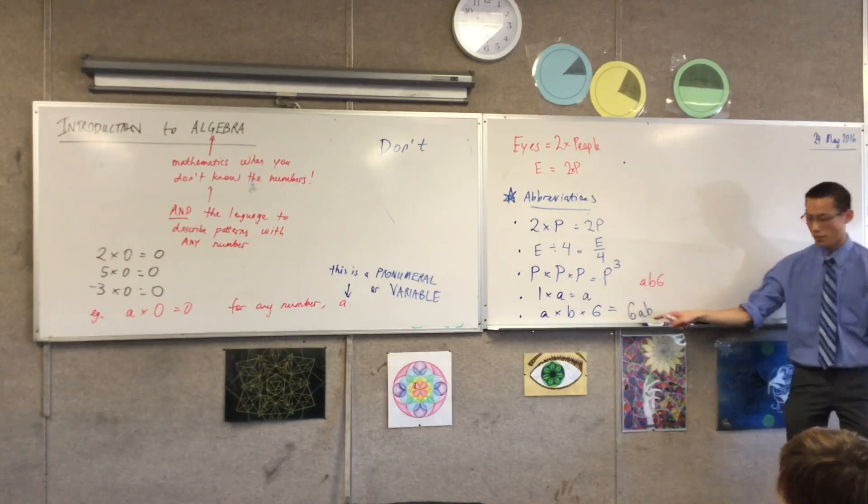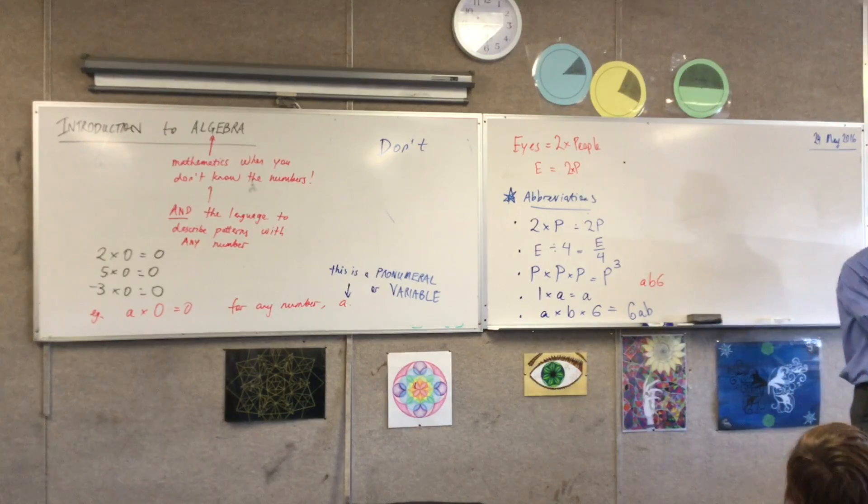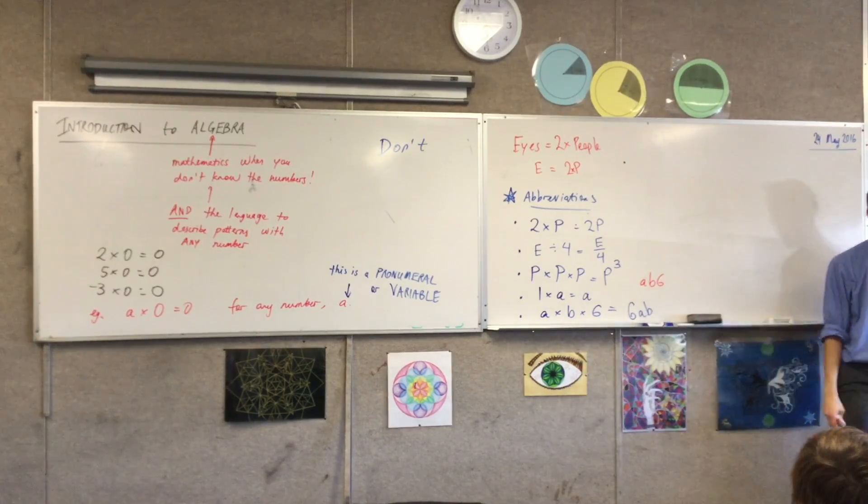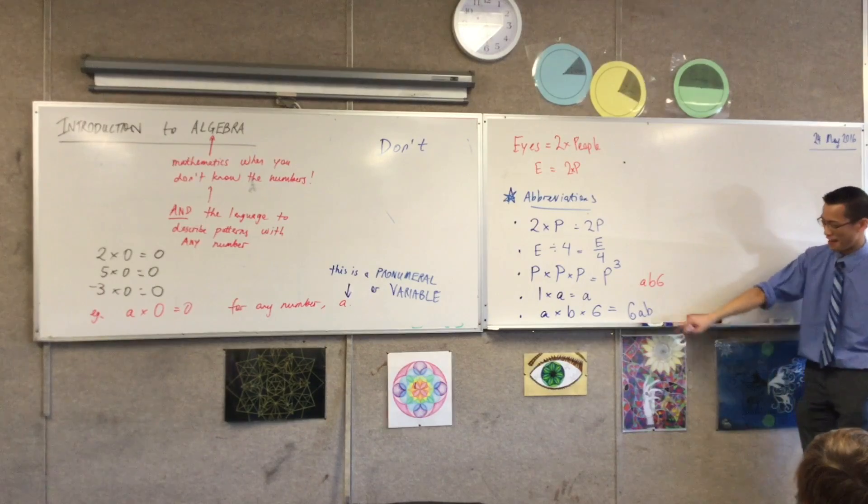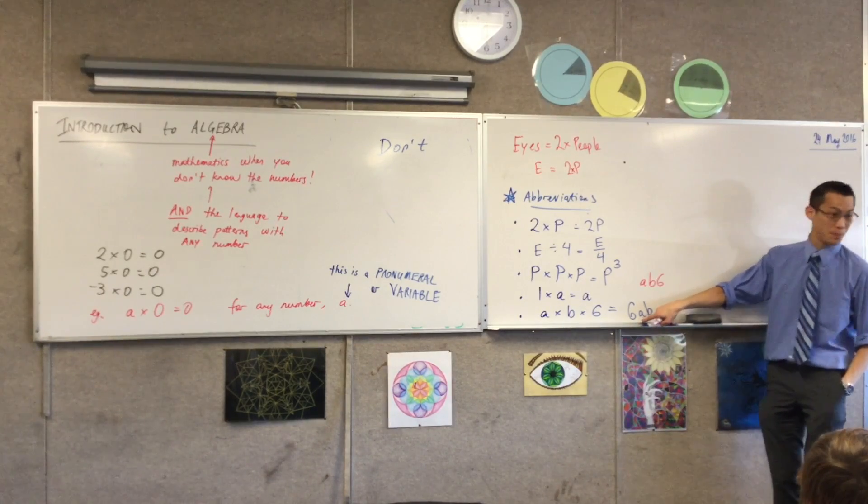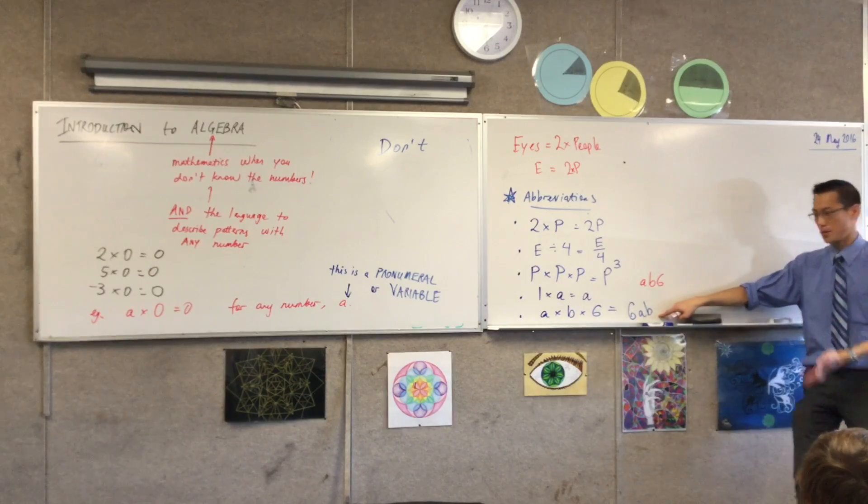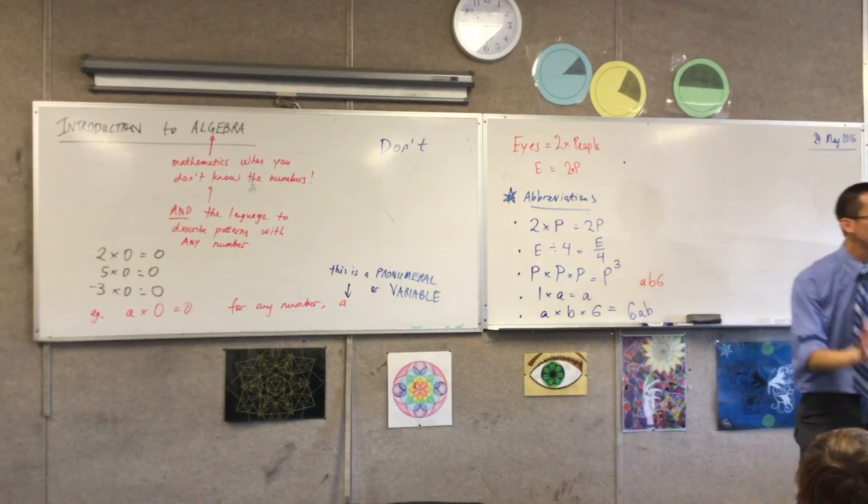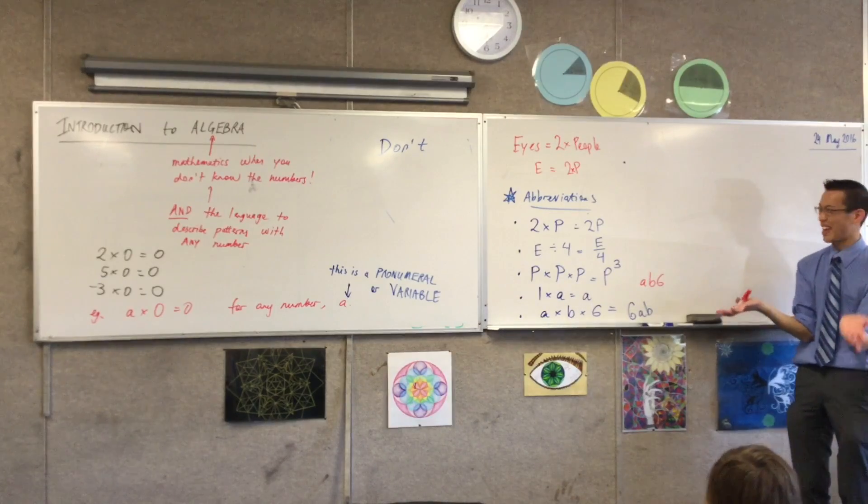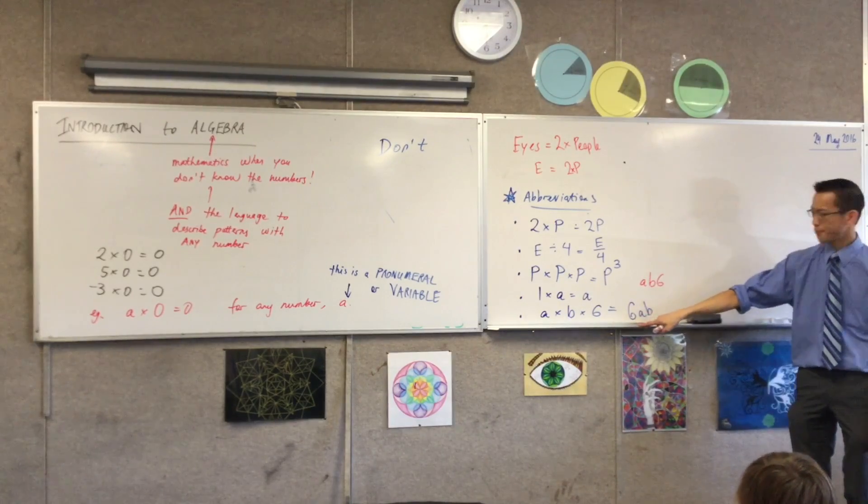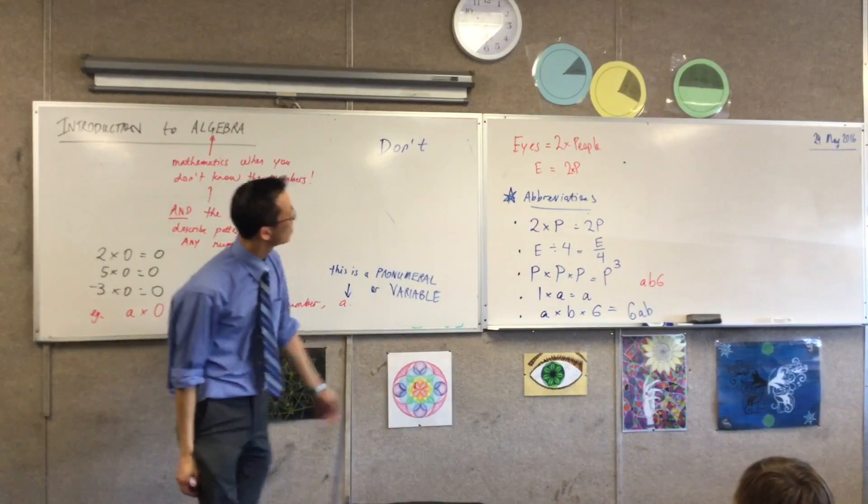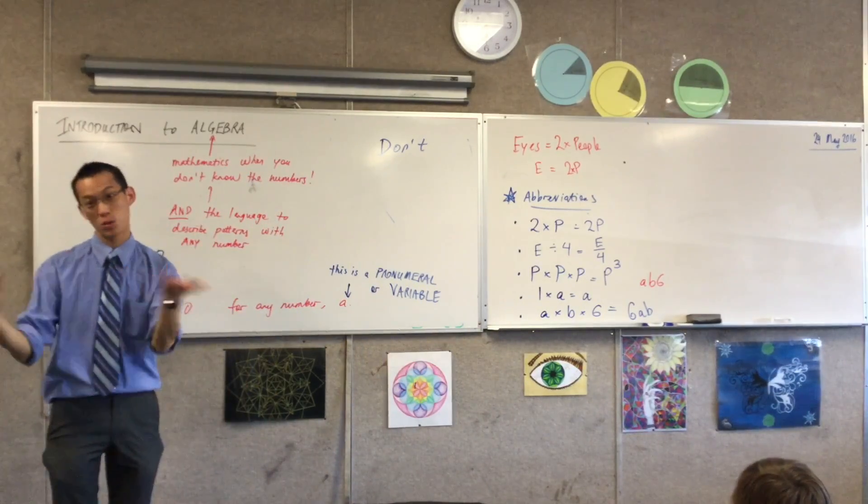However, Renesha was right in the first place. We do tend to put the number out the front. I will say, it's not always because the number is the most important. Suppose A and B were like 6 billion and 40 trillion. I would think that the 6 billion and the 40 trillion are more important numbers than the 6. But we don't know what they are. So by convention, so we're all kind of talking a common language, we abbreviate it in this way. In much the same way that we all agree that don't means do not. It's like, why do we do that? Well, at least that way we're all talking the same language.